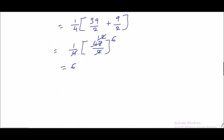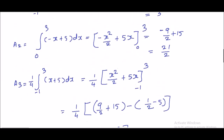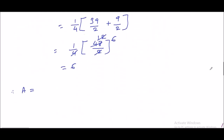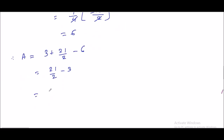Therefore, total area = A1 + A2 - A3 = 3 + 21/2 - 6. That gives 21/2 - 3 = 21/2 - 6/2 = 15/2 square units. That is all.